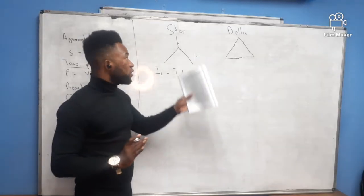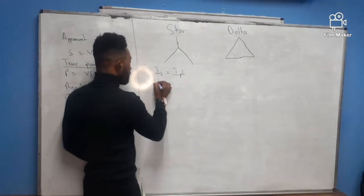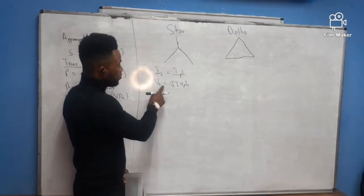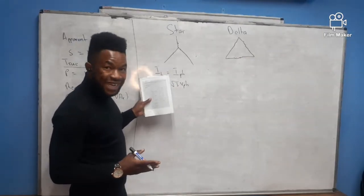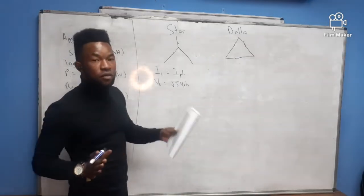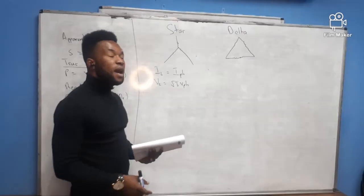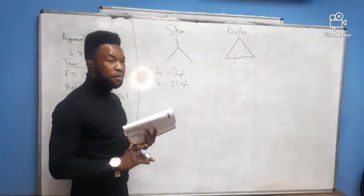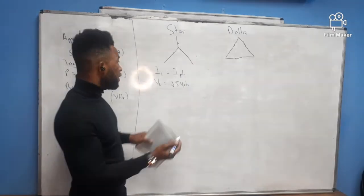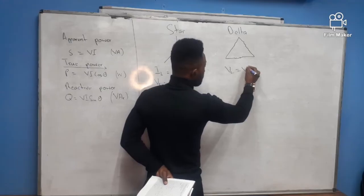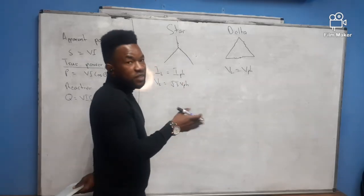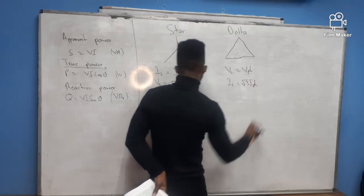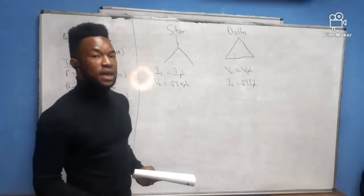For a star connection: the current stays the same whether line or phase current. The given voltage is always VL (line voltage) unless specified otherwise. On a delta connection, VL equals Vph, but the line current equals root-three times the phase current (IL = √3 × Iph). You must know the phase and line values for both star and delta.